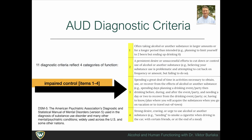The Diagnostic and Statistical Manual of Mental Disorders, also known as DSM-5, views substance use disorder on a continuum of severity across four functions.